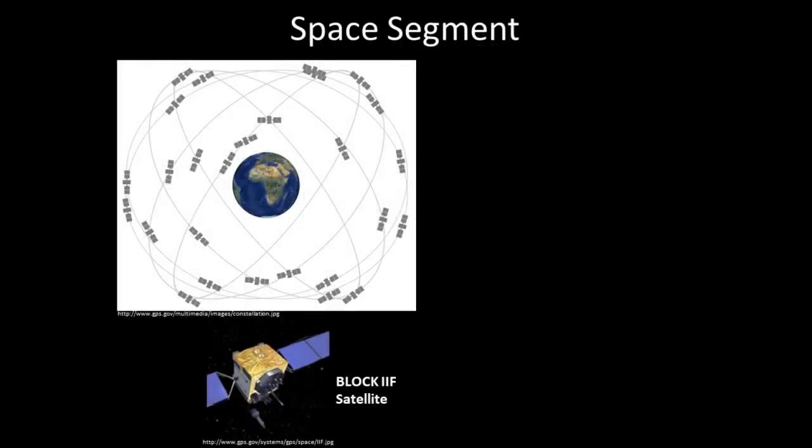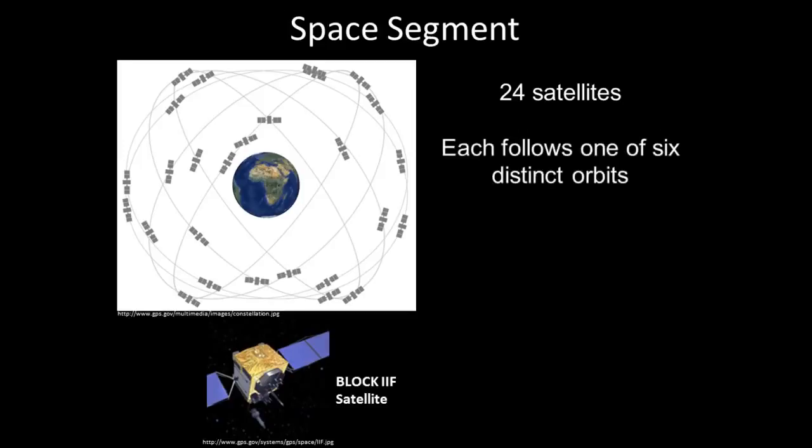The space segment is a constellation of at least 24 satellites. Each satellite follows one of six distinct orbits around the Earth. Each satellite circles the Earth in 12 hours, thus ensuring the satellites are visible at any time anywhere on the Earth. And, the satellites are continually broadcasting codes to GPS receivers, a topic I will discuss shortly.